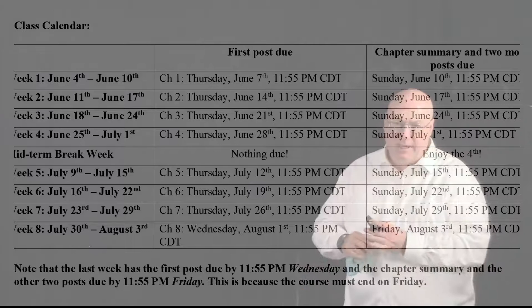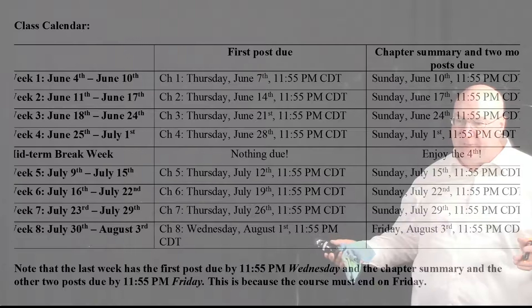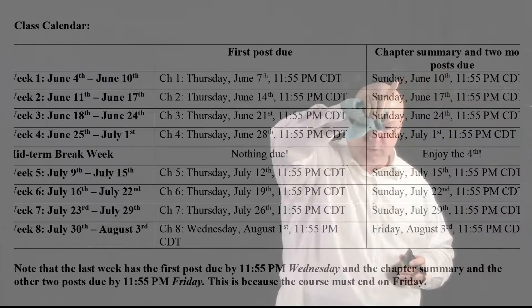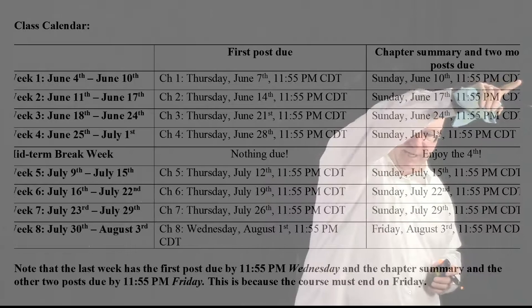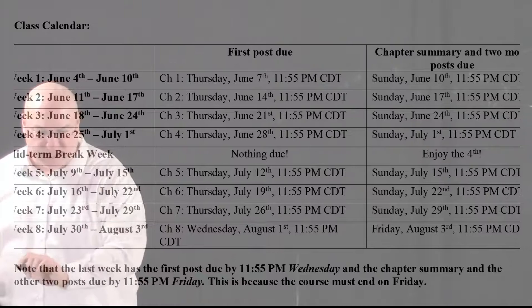So you can see how it works. First week, week one, June 4th to June 10th, chapter one. First post is due for chapter one Thursday, June 7th by 11:55 PM. Chapter summary and two more posts due by Sunday, June 10th, 11:55 PM CDT central daylight time. The T got trimmed off there, but it's central daylight time. And that's the way it goes for all the weeks, except the last one. The last one is different. The last one is condensed. So notice the dates and times are different for chapter eight.